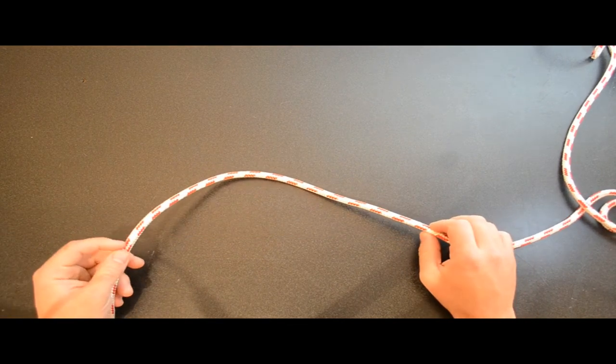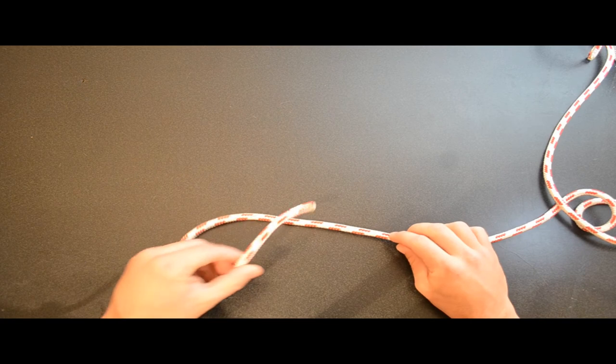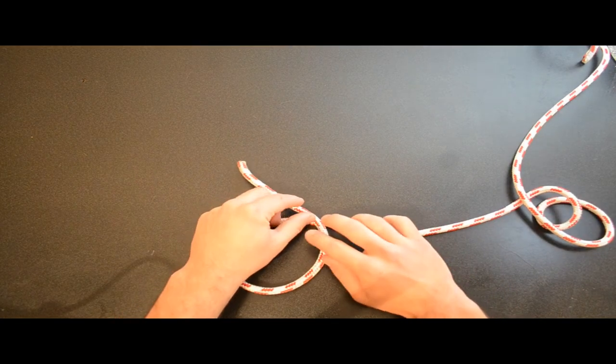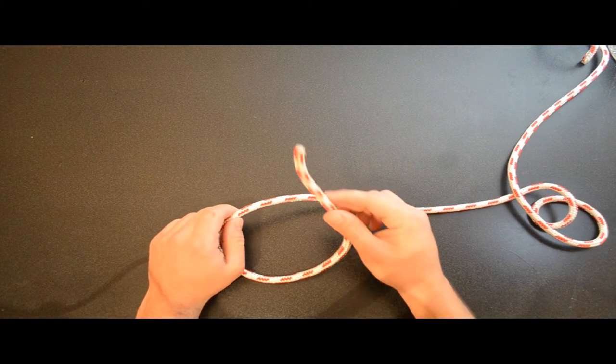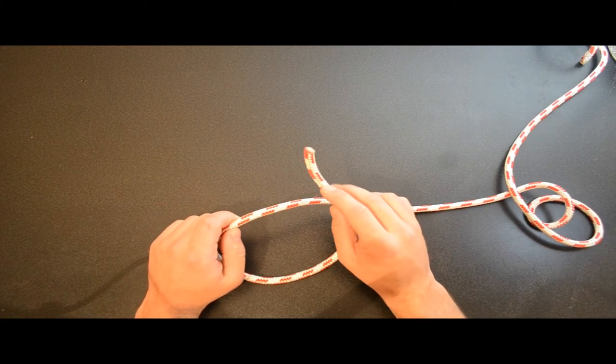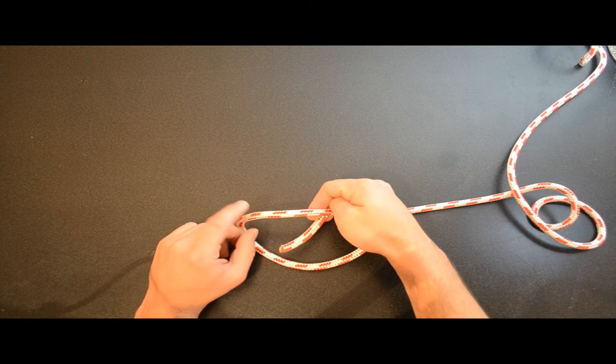To make an overhand knot, make a simple loop, then you're going to pass the working end from behind and through the loop.